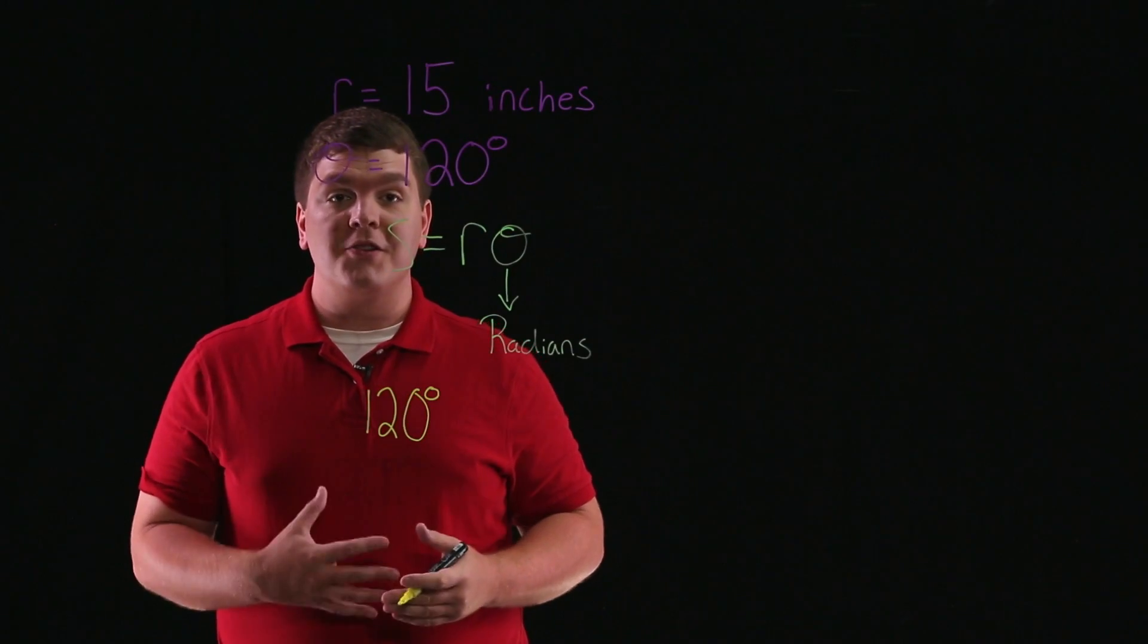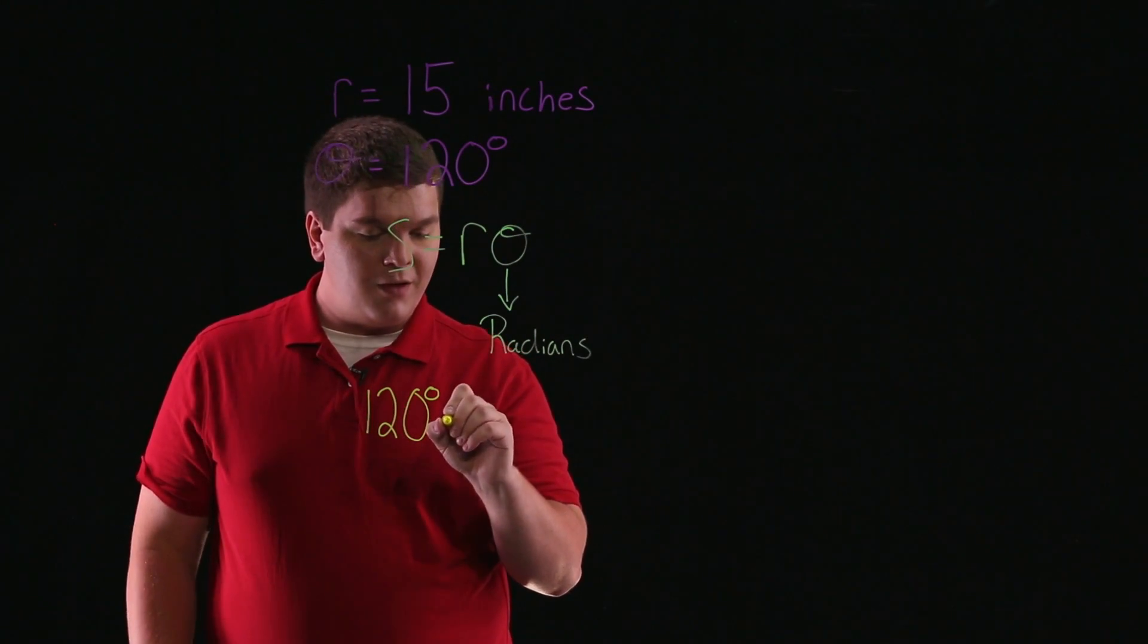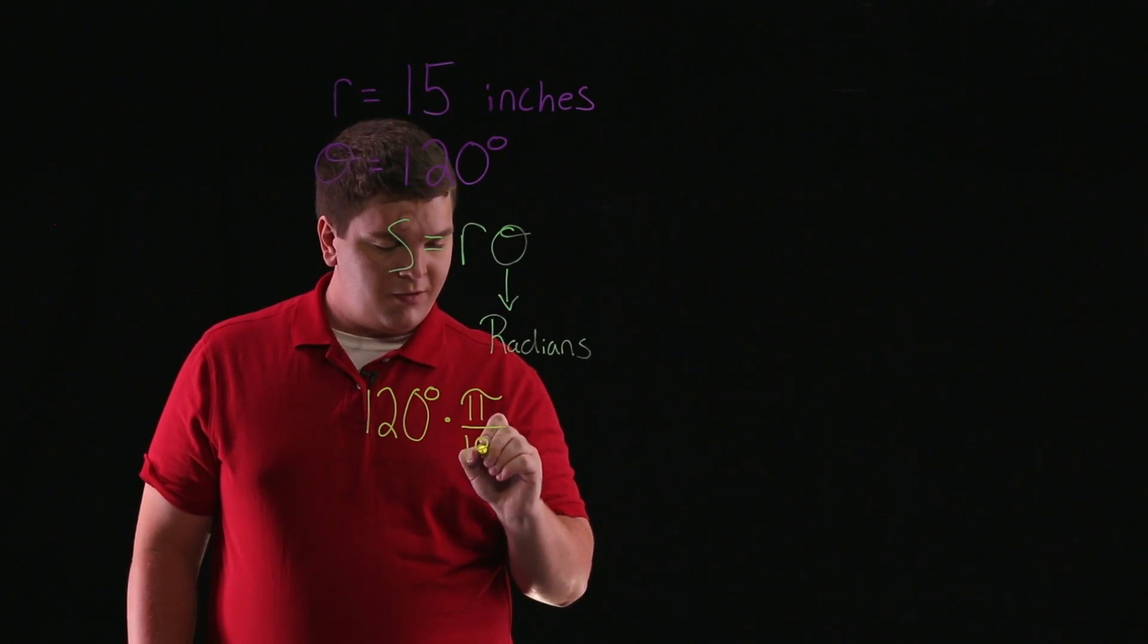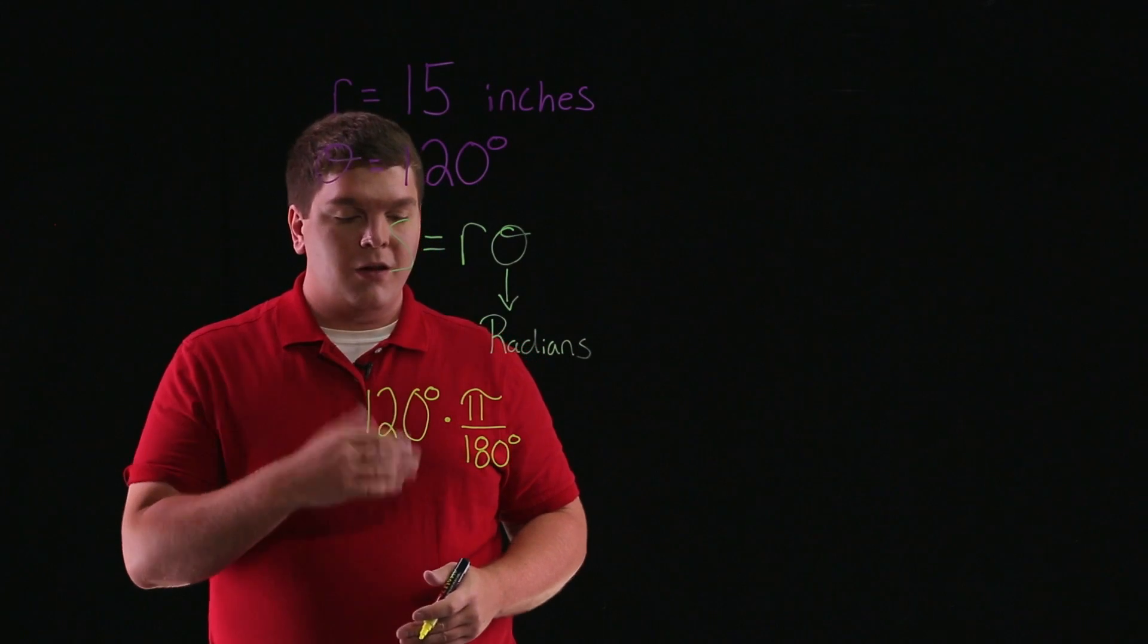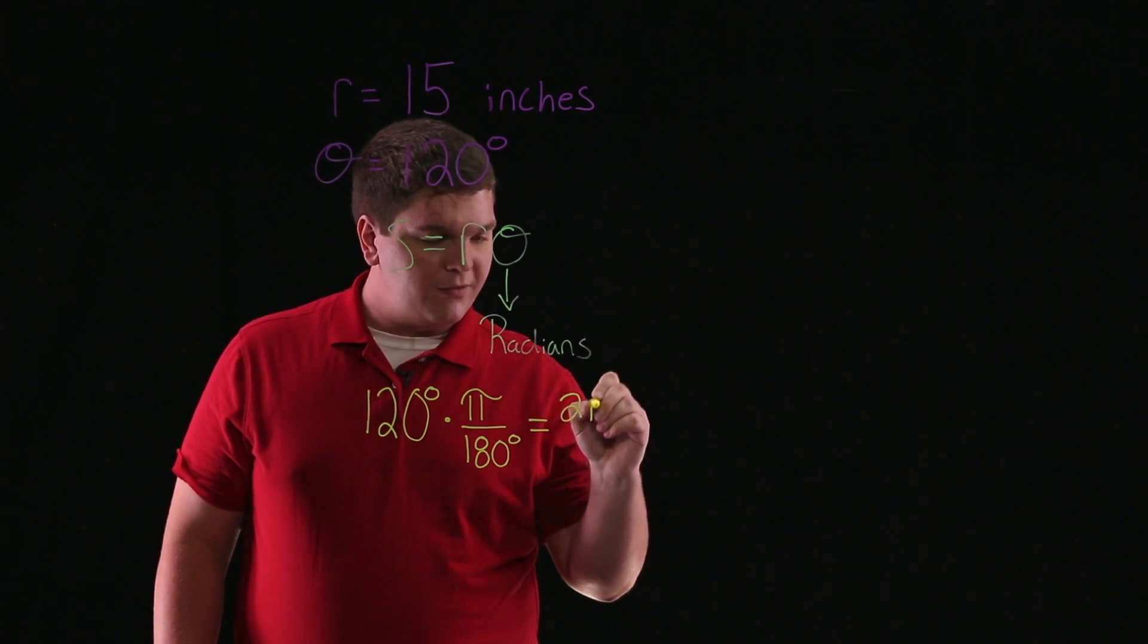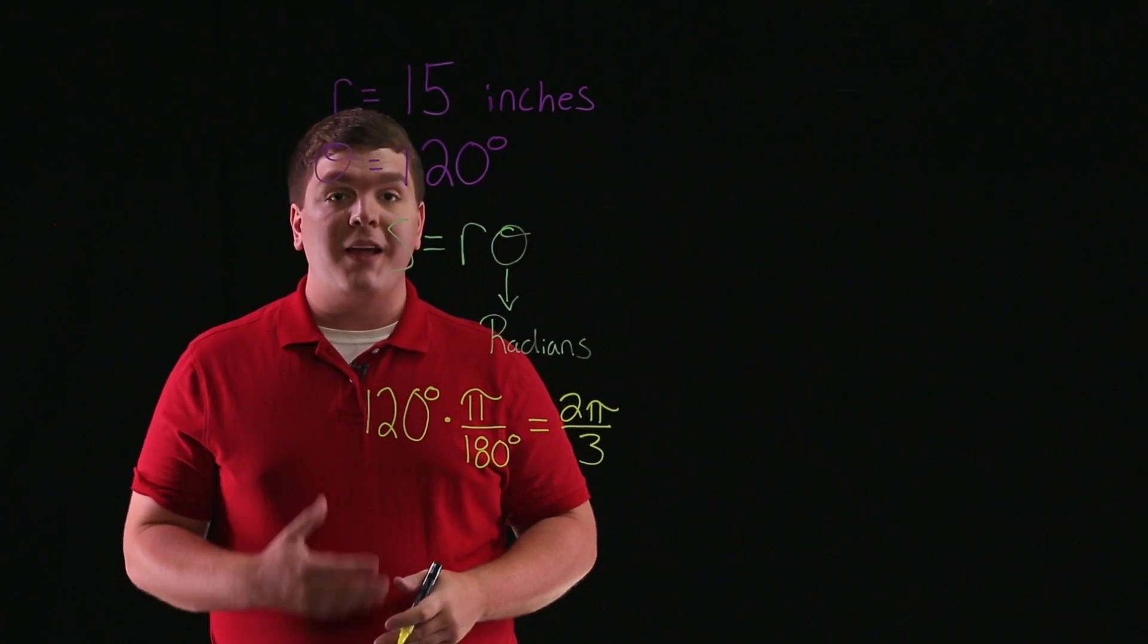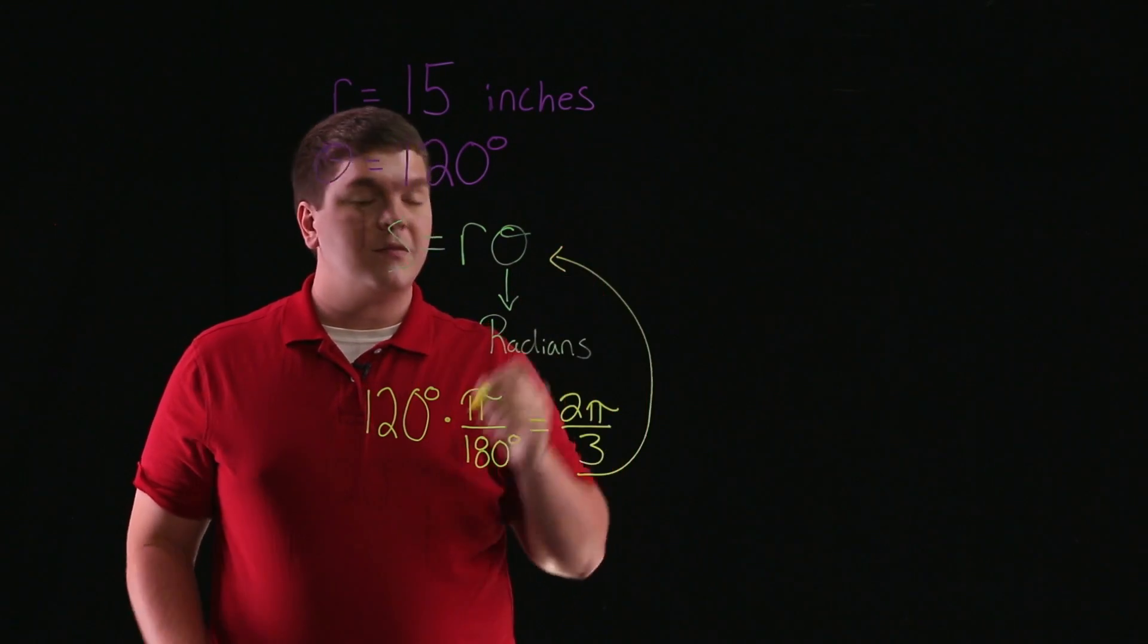To convert 120 degrees to radians, we'll multiply by pi divided by 180. Simplifying, we see that this is equal to 2 pi divided by 3. So the angle we're going to use in this formula is 2 pi divided by 3.